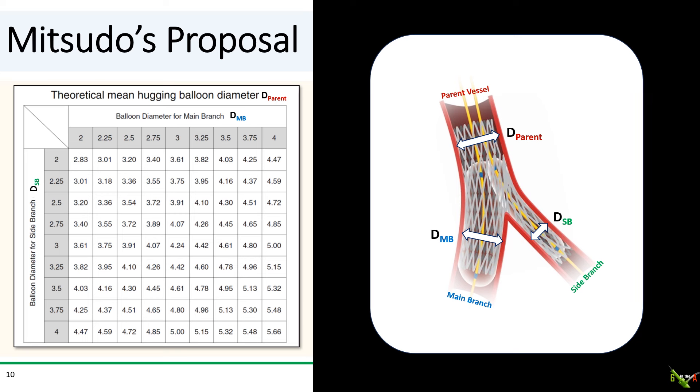So how the heck is this any easier? Well, it's easier because of this nice table they included in the paper. This table gives the diameter that one should expect in the parent vessel when using kissing balloons of various sizes. So, for instance, say you're trying to figure out a POT balloon in the case of a 3.0 millimeter main branch and a 2.5 millimeter side branch. If you look at this table, you'll see that the parent vessel in that case should be 3.91 millimeters, so you'll need to pick a roughly 4.0 millimeter POT balloon.